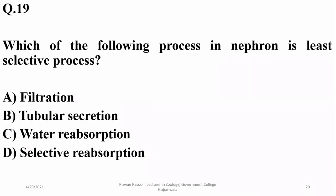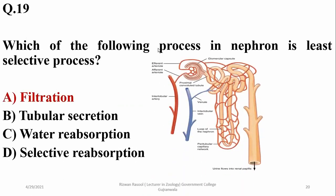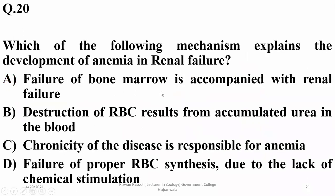Which process in the nephron is least selective? It is filtration, because most substances move into the nephron without specific selection. Tubular secretion is a highly selective process, whereas filtration is the least selective.